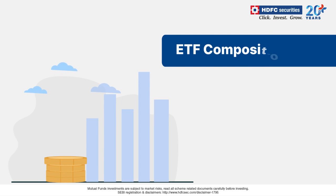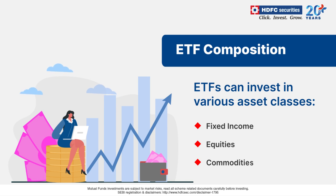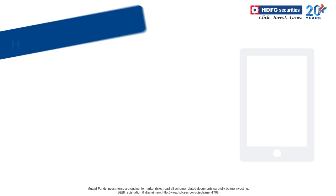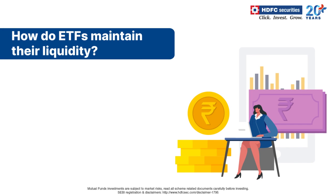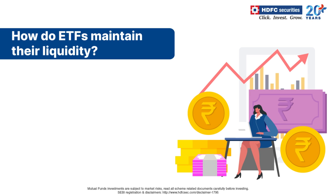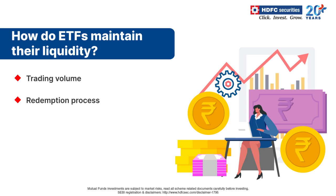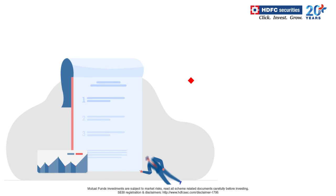ETFs can be used to invest across different asset classes, from fixed income to equities and commodities. Several factors impact the liquidity of an ETF, including the asset class invested in, market capitalization of the security, and the risk profile of the underlying securities. Different ETF products have different levels of trading volume during market hours, and that's how they derive liquidity in a secondary market for the redemption process.